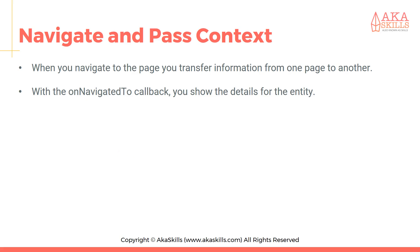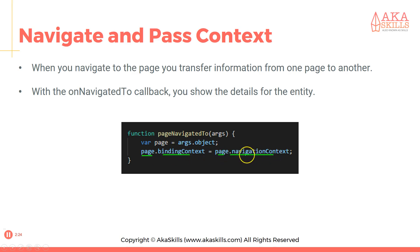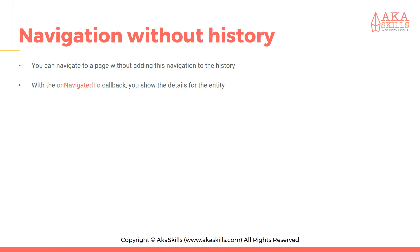This will also pass the context when you navigate to the page, transferring information from one page to another. With the onNavigatedTo callback you show the details for the entity. I have a function that receives some arguments, and I'm saying var page = args.object, then setting page.bindingContext equal to page.navigationContext.